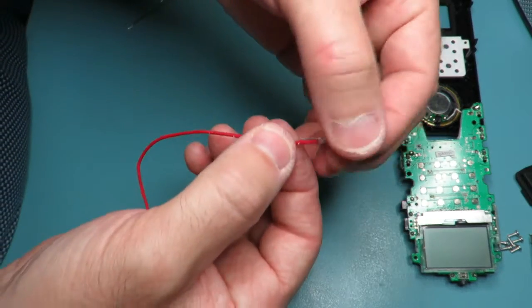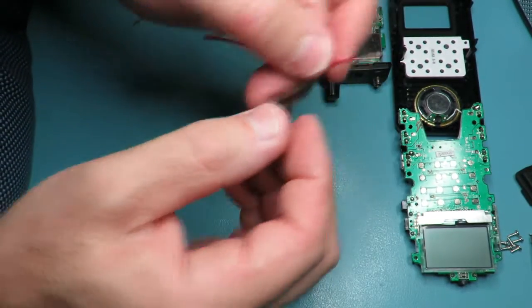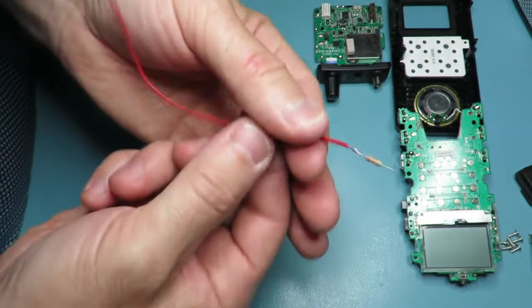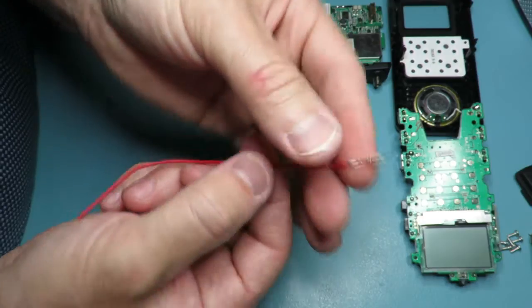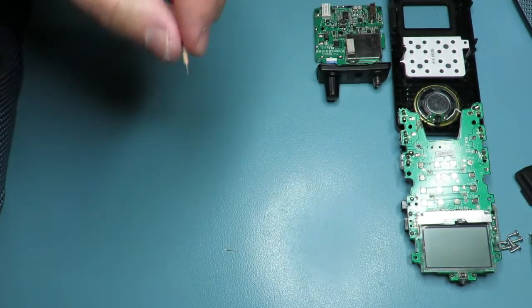And you can see that you could put some heat shrink around that bit if you wanted to tidy it up.